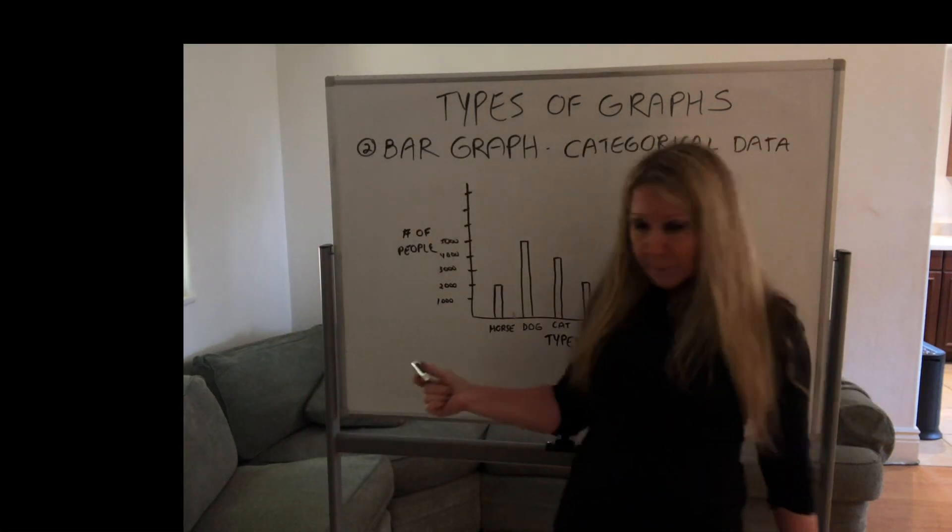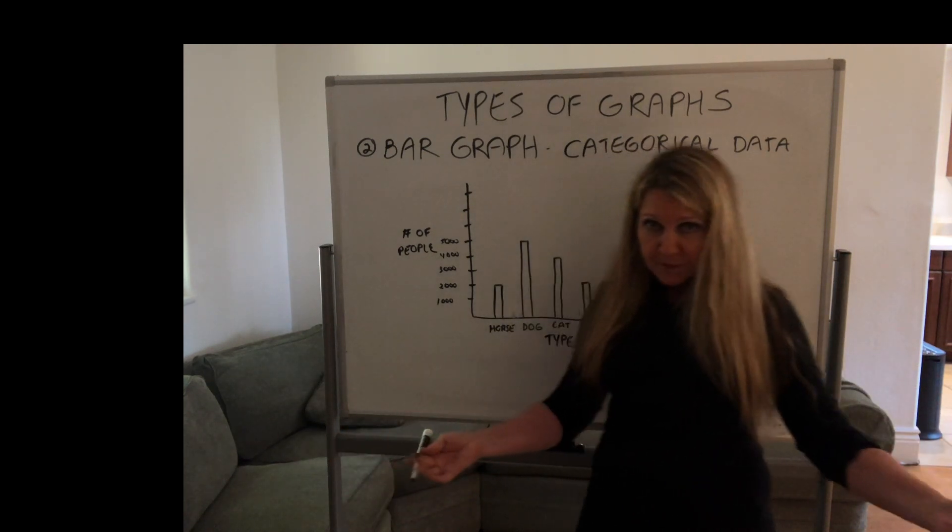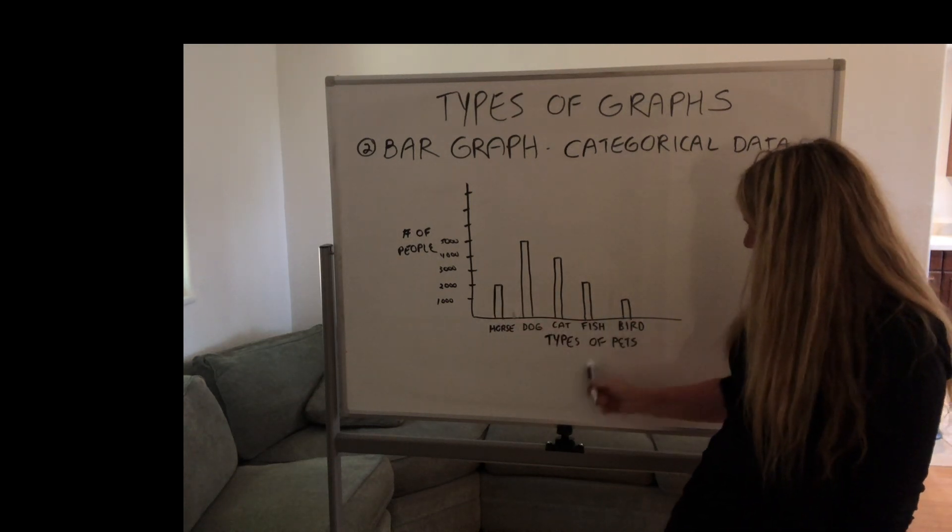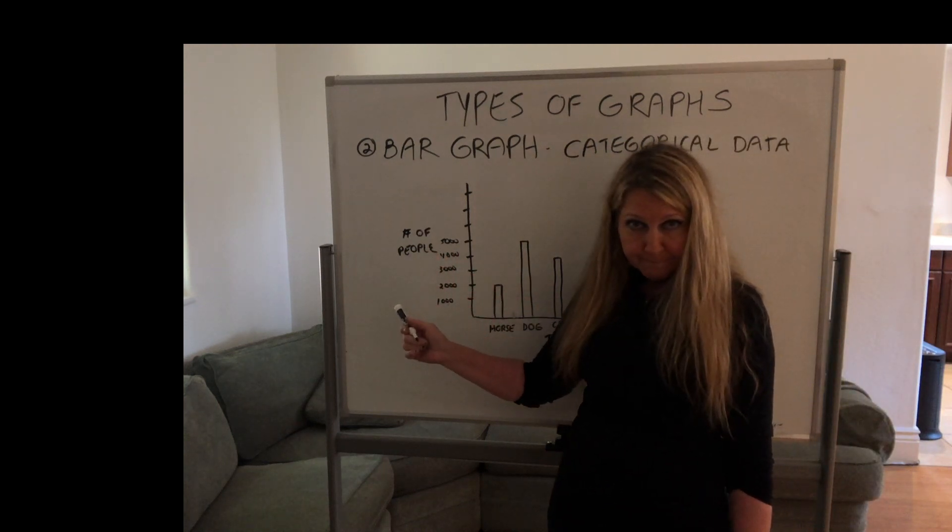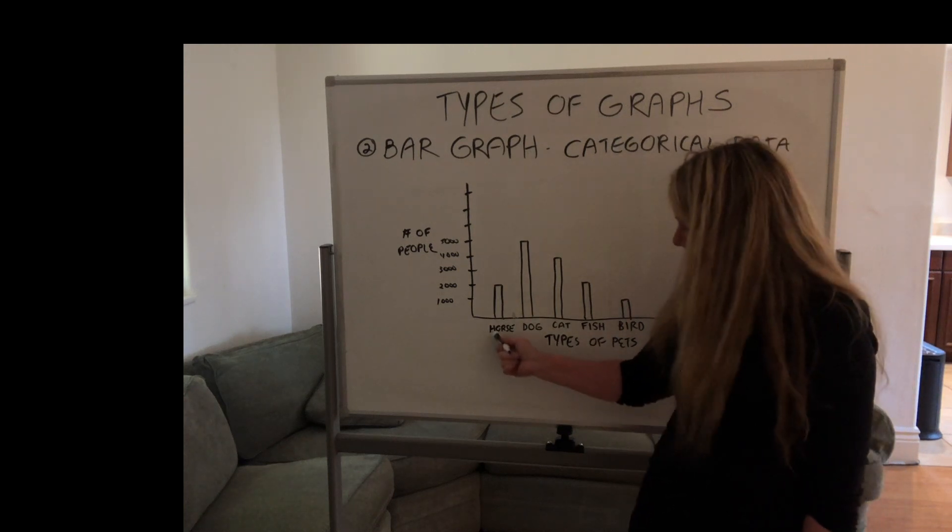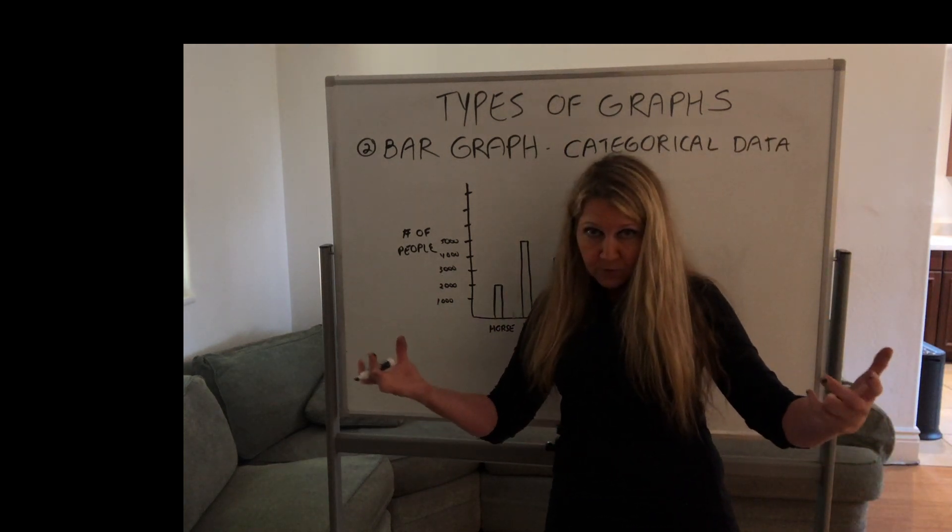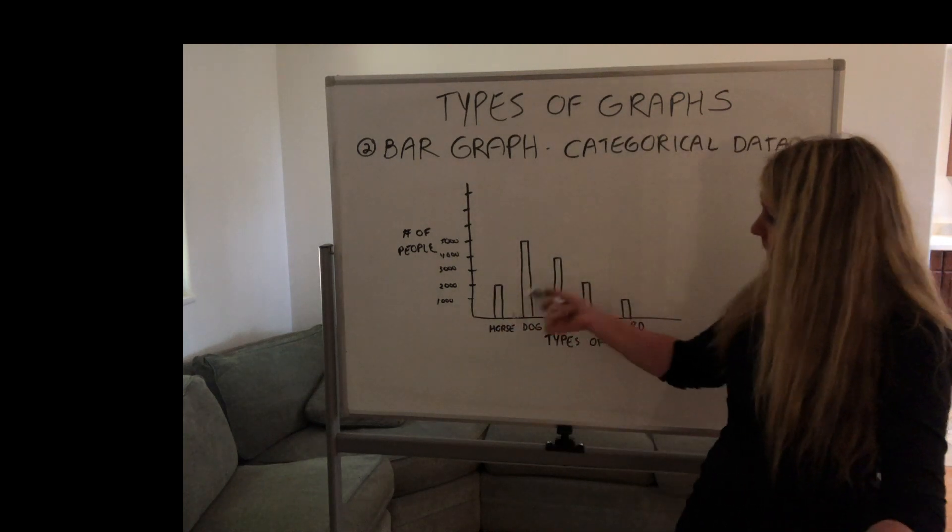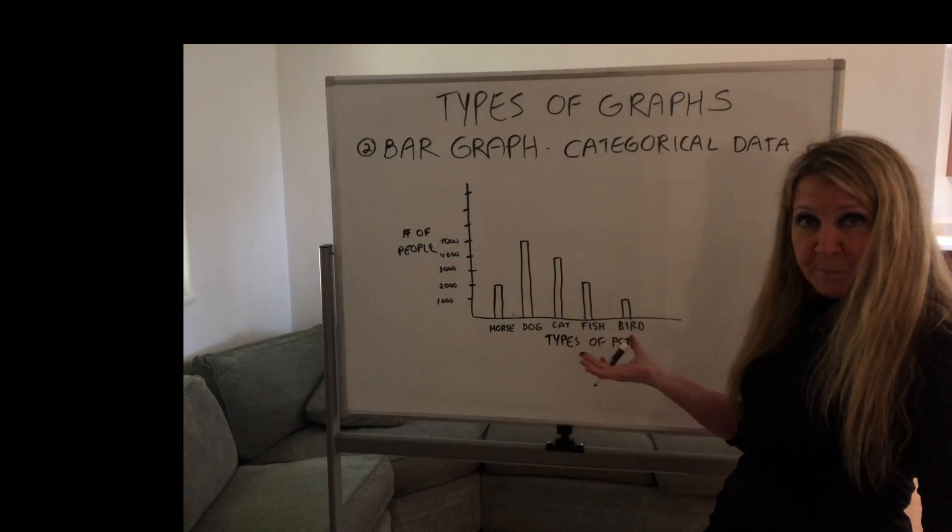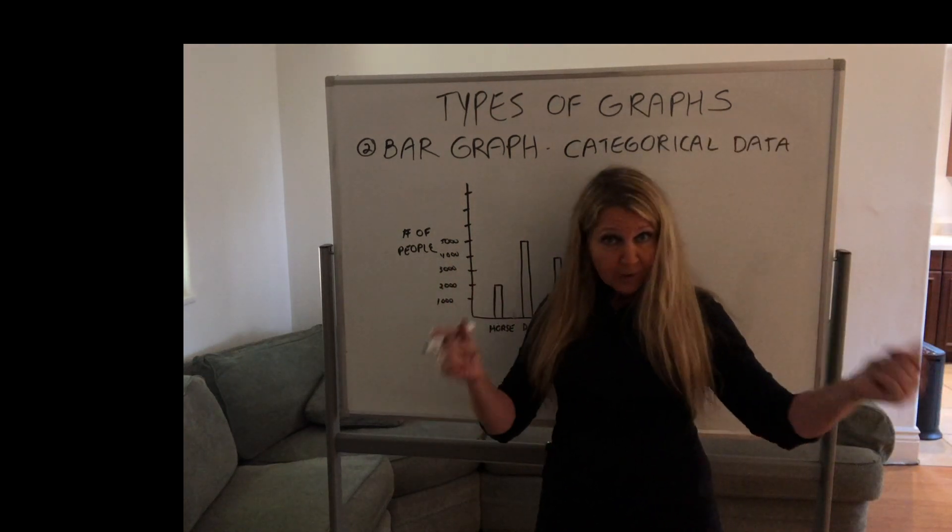Here we have a bar graph representing, let's say we did a survey in San Francisco. We want to figure out how many people own these different types of pets. So here we have the types of pets, horse, dog, cat, fish, bird, and then the number of people that own them. So these are categories of pets. Okay, this is, if we're using categories, we are going to use a bar graph. So this is a way, we can look at this now and easily tell which type of pet most people own in San Francisco. This is much easier to interpret data from a graph than it is to read a bunch of numbers. Data can get confusing very fast.